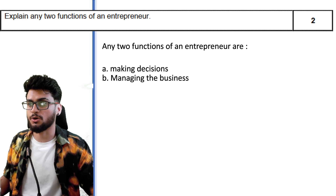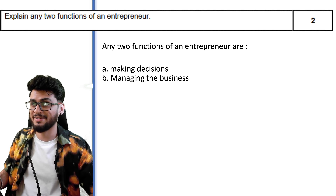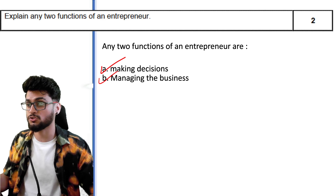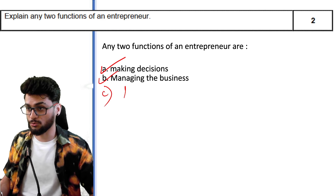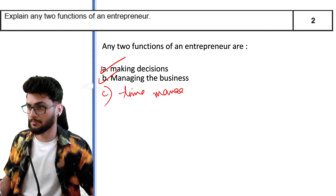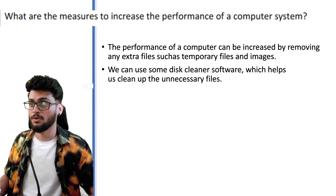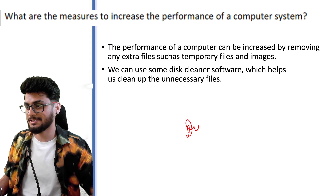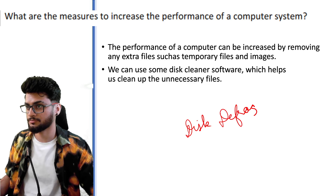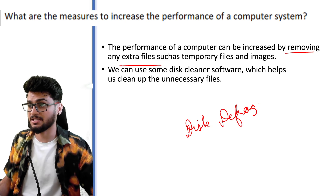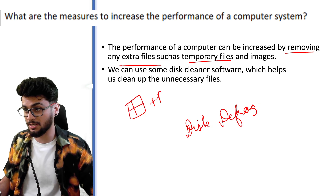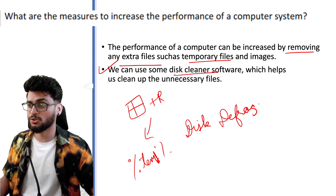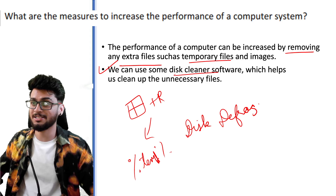'Explain any two functions of an entrepreneur.' What does an entrepreneur do on an everyday basis? He or she has to make decisions, manage the business, and also do time management. To increase the performance of a computer system: you can do disk defragmentation, remove extra files such as temporary files using Windows + R and going to the temp folder to delete everything, use disk cleaner software, and also use antivirus.